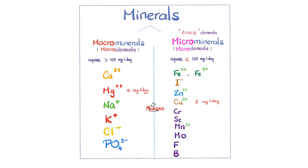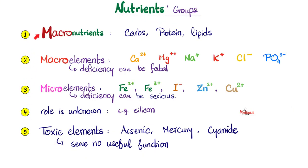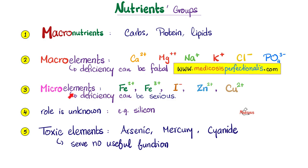The microminerals or trace elements include iron, iodine, zinc, copper, chromium, selenium, manganese, molybdenum, fluoride, and boron. Vitamins are coenzymes or precursors to coenzymes, but minerals are cofactors to enzymes. Some minerals belong to the alkali or alkaline earth metals, others to the transition metals. Today we'll focus on these trace elements whose deficiency can be serious, but usually not fatal.